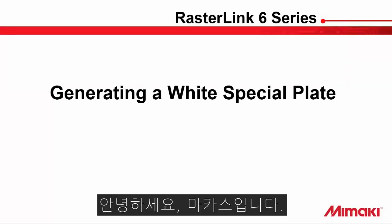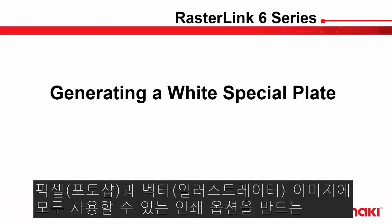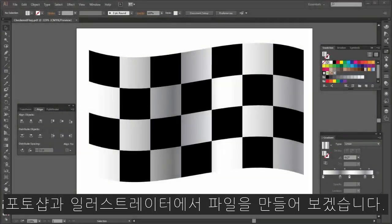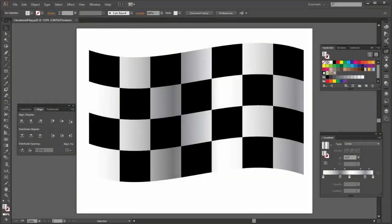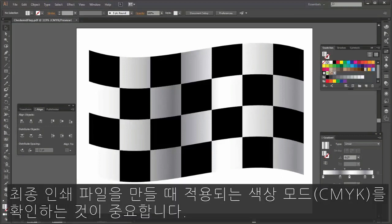Welcome to Mimaki's Rasterlink tutorial series. In this short movie, I will be demonstrating a couple of advanced methods for creating custom white layers and printing options available for both pixel and vector images. I will be creating the files in Photoshop and Illustrator. If you use other programs, the important part is the color mode applied when creating the final print files.